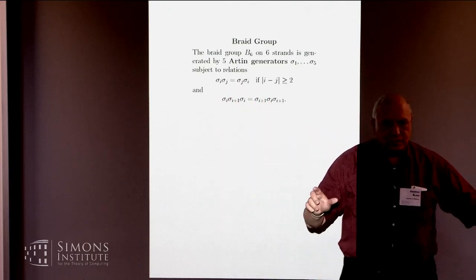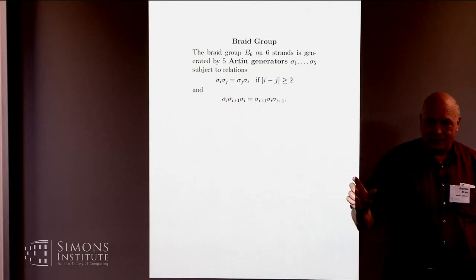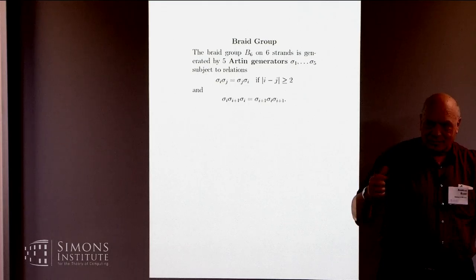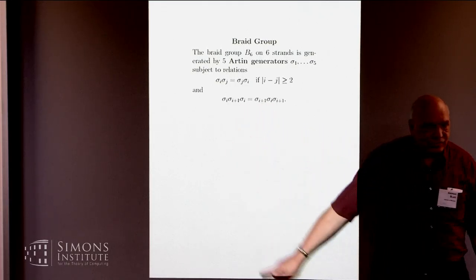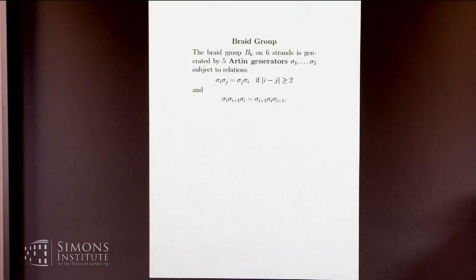The braid generators satisfy two sets of relations. Obvious ones, if you're doing two interchanges that are far apart from each other, it doesn't matter in what order you do them. And then there's an interesting one where the adjacent ones commute. And I was going to draw a picture of that, but I think in the interest of time I will save pictures for later. So you have a theorem of Artin, a not-so-trivial theorem of Artin, is that those generators and those relations suffice to completely determine the braid group. That is a presentation of the braid group.